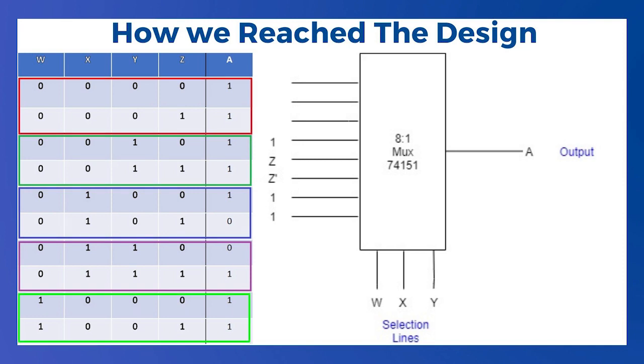When WXYZ are at 1 0 0, A is always 1, so A is assigned to pin 5. Remaining all pins we make to do spare.